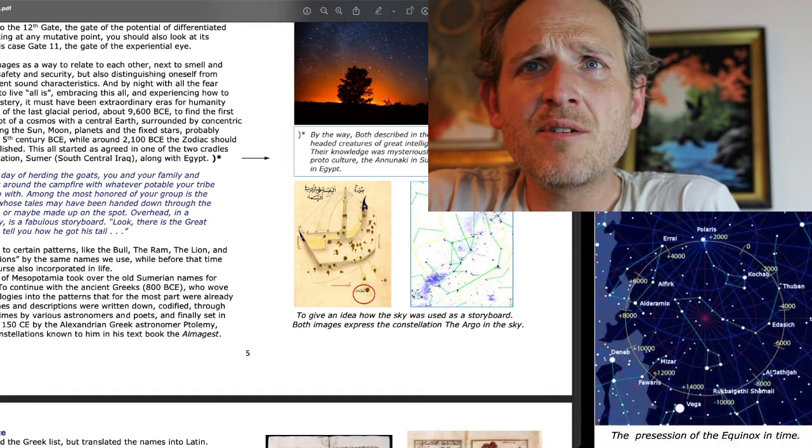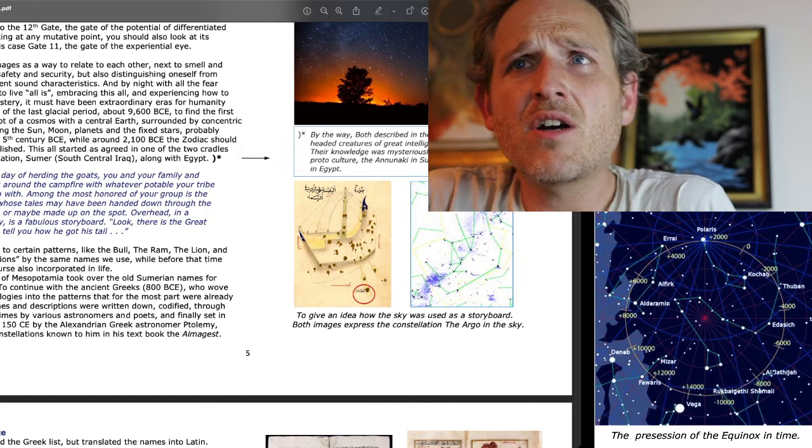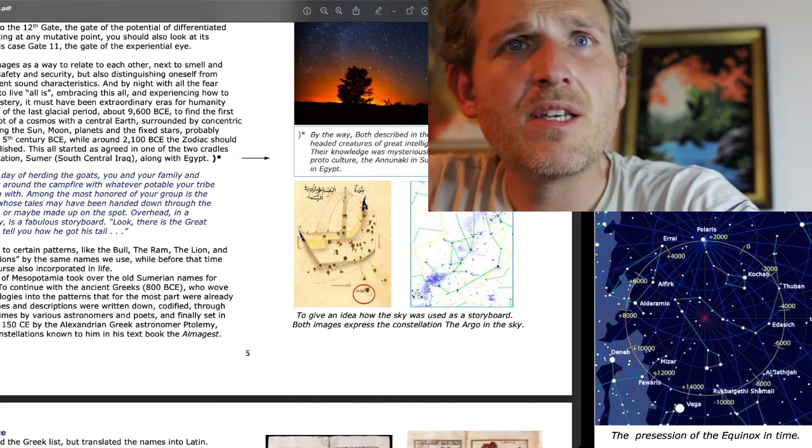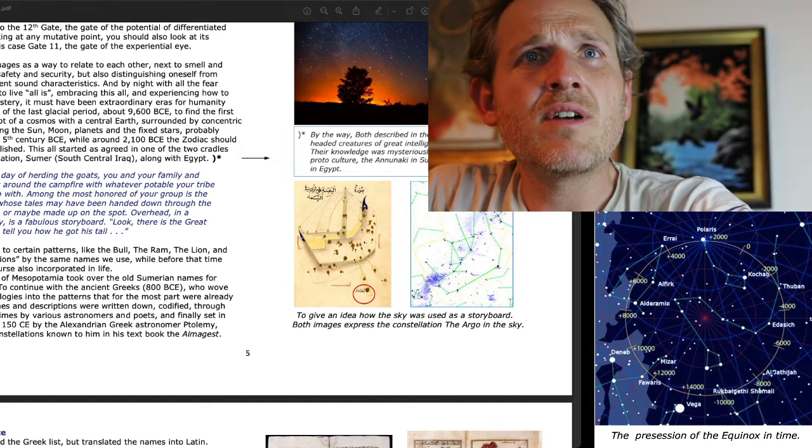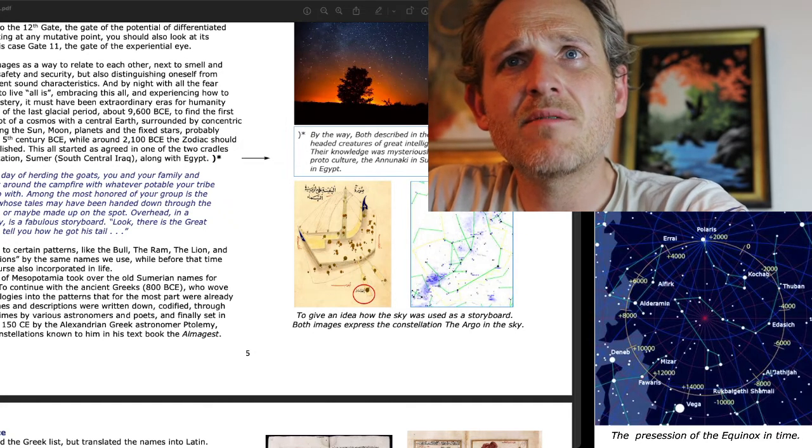To give an idea of how the sky was used as a storyboard, both images expressed the constellation, the Argo, in the sky. Yeah, the Argo, like, of the Argonauts. And you can see the images we have right here.